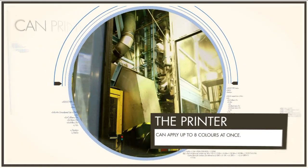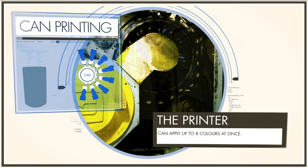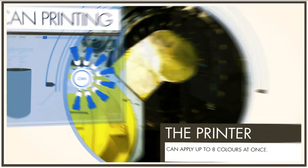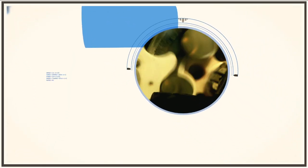From the oven, the can is sent to the printer, which can apply up to eight colours at once. This is where it really becomes the can as you know it. The inside is also sprayed with a coating to stop the contents from reacting with the metal.